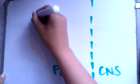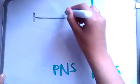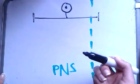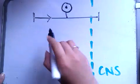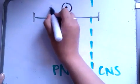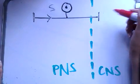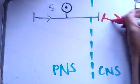Sensory neurons carry an impulse from the peripheral nervous system to the central nervous system. They have their cell body within the peripheral nervous system — you should know this from unit 4. The direction of the impulse is towards the central nervous system. From there, the impulse is picked up by a relay neuron, which exists only within the central nervous system.